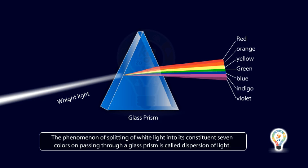The band of seven colors obtained on a screen on passing white light through a prism is called a spectrum. As all the colors in this spectrum are visible to our eye, it is rightly called a visible spectrum.